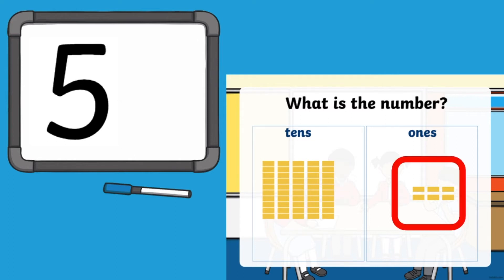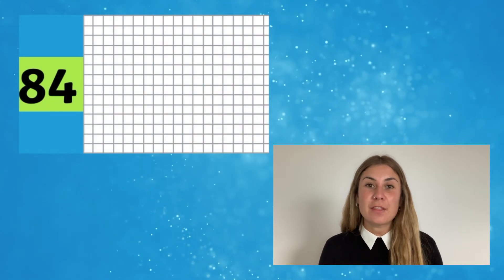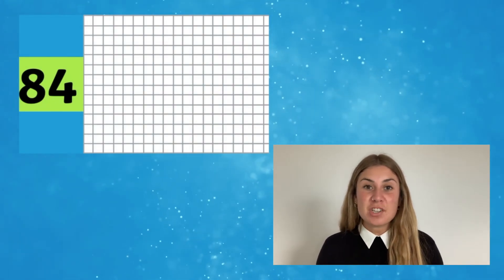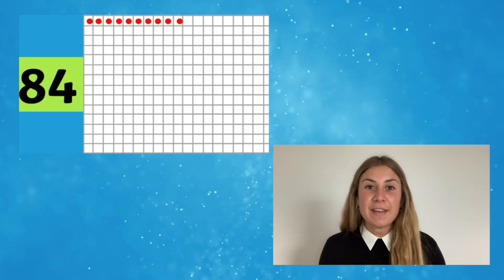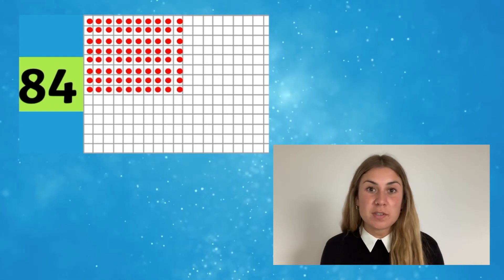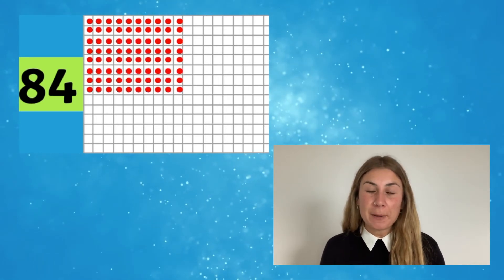Alternatively, you could get your children to complete the reverse. Give them a two-digit number and see if they can use blocks or dots to make the right number. They can begin by filling in the tens and then doing the ones.